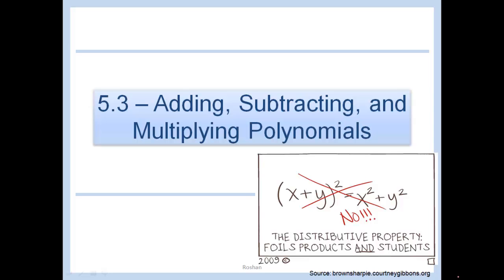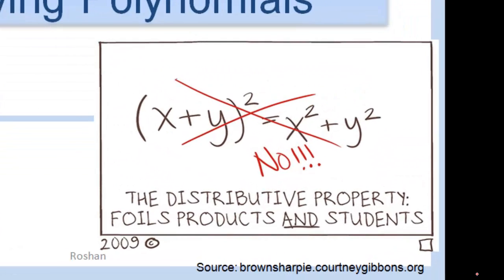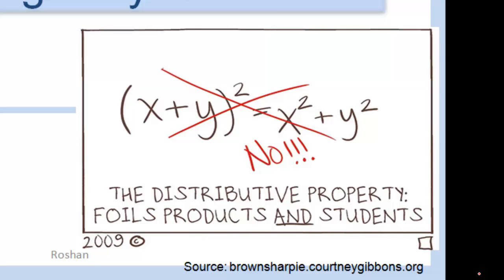5.3, adding, subtracting, and multiplying polynomials. Like I always say, FOIL or FAIL.